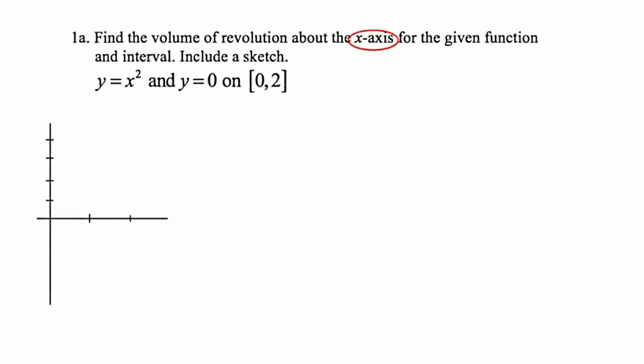On slide number three, we'll take a look at our first example: find the volume of revolution about the x-axis for the given function and interval, and include a sketch. Our function is y = x² on the interval from 0 to 2. y = x² would be a parabola. When x is 0, y is 0; when x is 1, y is 1; when x is 2, y is 4. We're also going to bound this with y = 0. We're starting when x equals 0 and going to 2. This is the x-axis here, which is important because that's how we're going to revolve this. I'm going to put one of these little rotation symbols here to indicate that rotation.